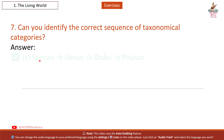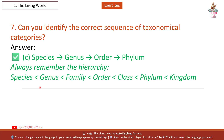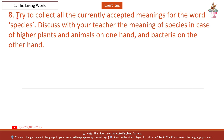Question 7: Can you identify the correct sequence of taxonomical categories? Answer: The correct sequence is: Species → Genus → Family → Order → Class → Phylum → Kingdom. Always remember this hierarchy — Kingdom is at the topmost level.